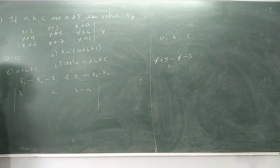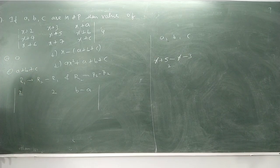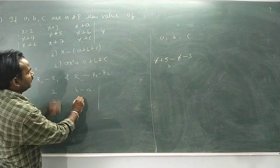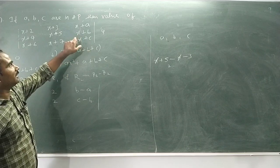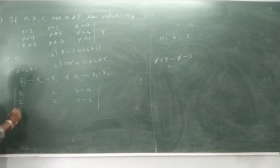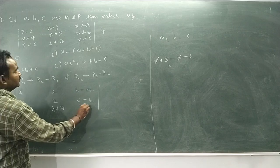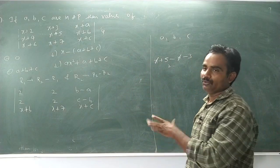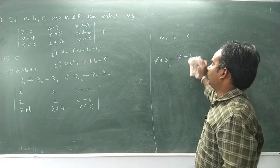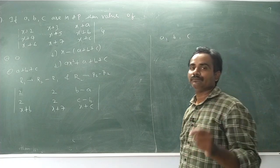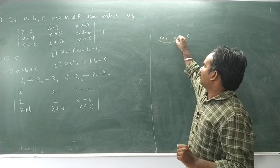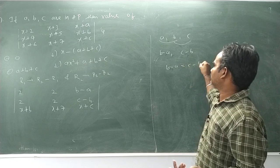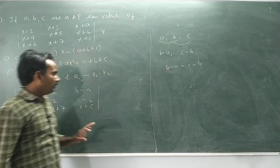Now R3 minus R2. This gives C minus B. Then X plus C minus X minus B, so X cancels giving C minus B. Since A, B, C are in AP, the difference B minus A equals C minus B. Both differences are equal.